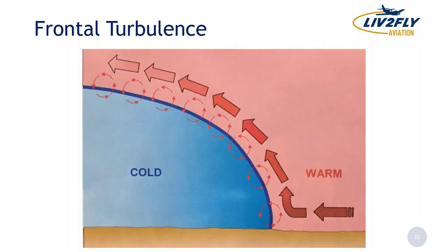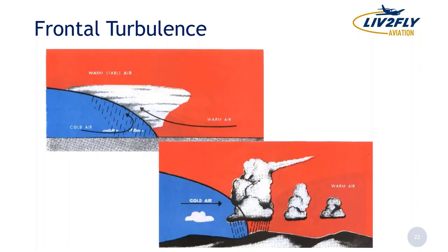Frontal turbulence is something we all experience. As Sarah mentioned, when you've got the mixing of two different air masses, the pictures we see in our books show a homogeneous front coming through, but the reality is there's a lot of turbulence associated with these fronts. When you have a warm front or cold front approaching, you can expect turbulence — it may be convective, or it may be more stratus-type clouds with smoother air, but when that frontal boundary hits you, you can expect turbulence.